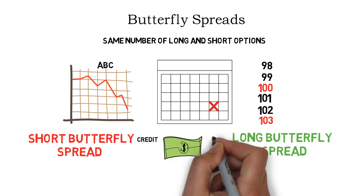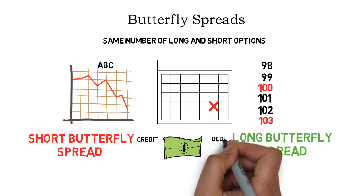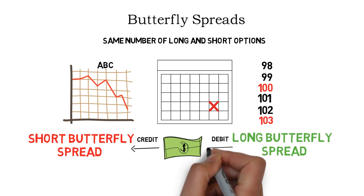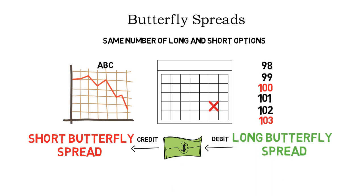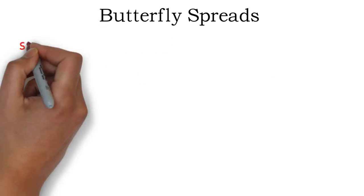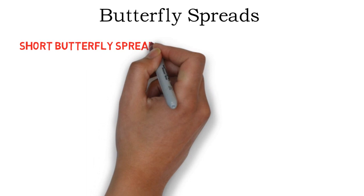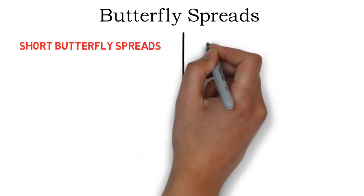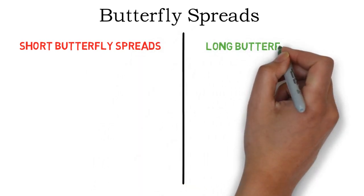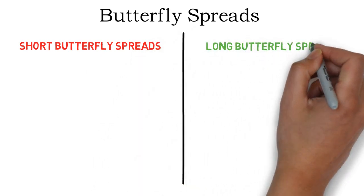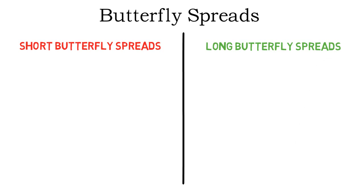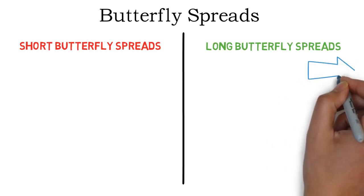In other words, you get paid to open a short butterfly spread and you have to pay to open a long butterfly spread. The short butterfly spread is a price indifference strategy and a long butterfly spread is a range bound strategy.